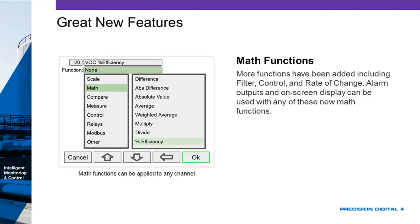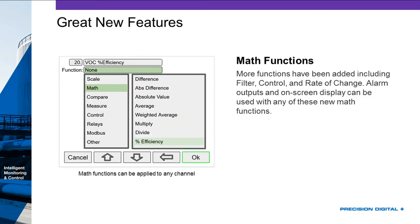We added a few math functions. We've always had difference, absolute difference, absolute value, averages, weighted average, multiply, and divide. But now we've got rate of change, which is very important. Rate of change is great for applications like checking for a leaky tank — if the level is changing but not fast enough to prove it's the pumps, set off an alarm. Maybe you want an average value of effluent flow, and if you go over that rate you need to know. Maybe you want to check rate of change to make sure pumps are working properly — no blown seals, pumping fast enough but not too much. Rate of change can really be used for a lot of great diagnostics. You can display that rate of change and alarm on it.